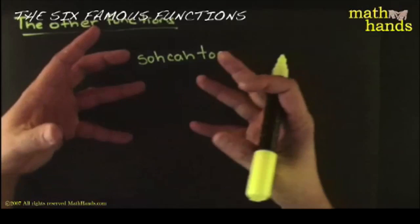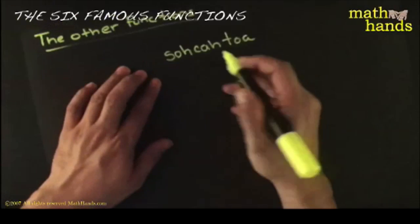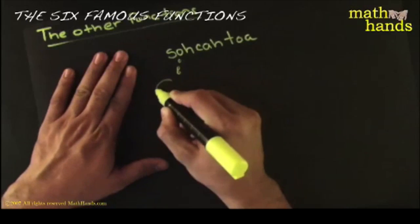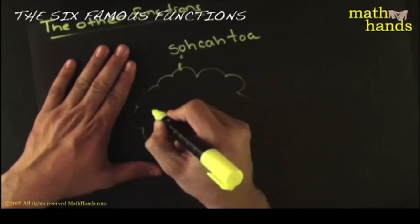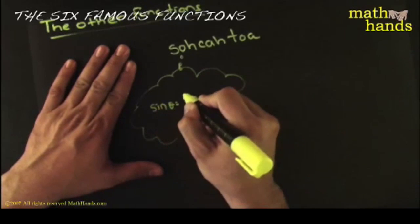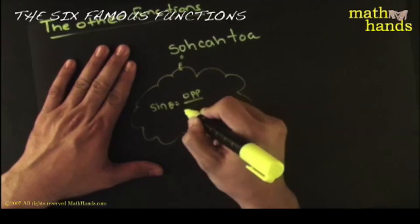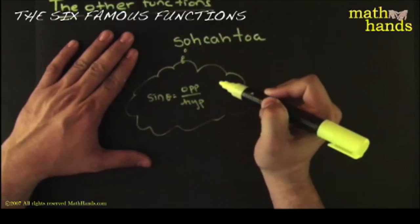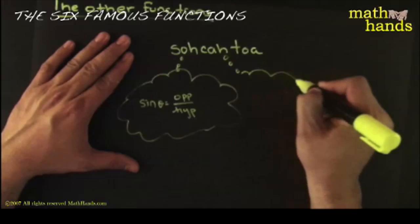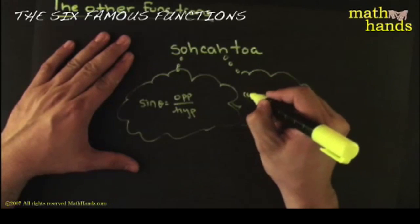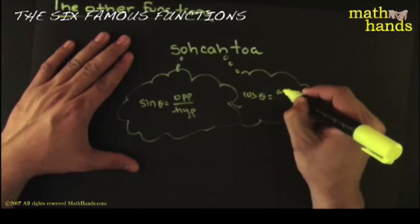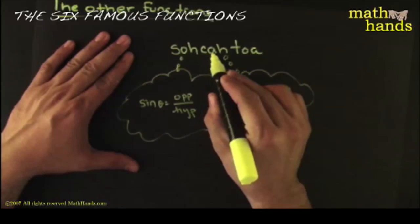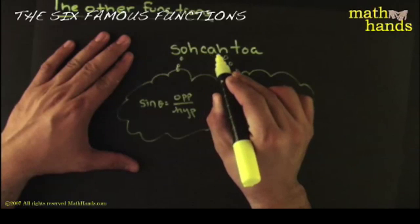Many people use the word SOH-CAH-TOA to remember the trig functions. SOH helps you remember that sine of any angle theta is opposite over hypotenuse. CAH helps you remember that cosine of any angle theta is adjacent over hypotenuse.